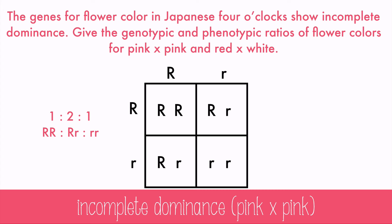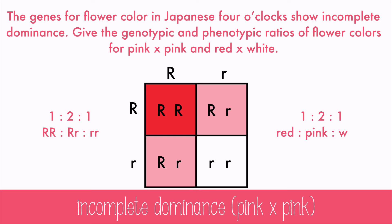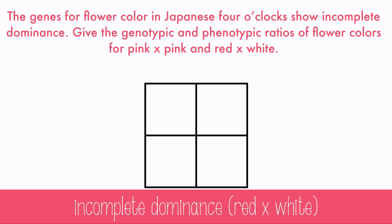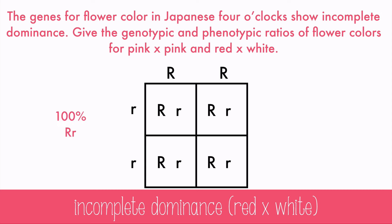It's a 1 to 2 to 1 ratio, which is the same ratio for the phenotype — a 1 to 2 to 1 ratio of red, pink, and white. Now here's the cross for red and white flowers. Fill out the square. This time there's 100% big R little r heterozygous, which means that all the flowers — 100% — are pink.